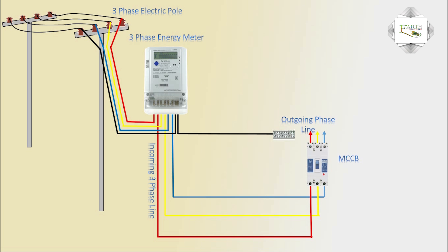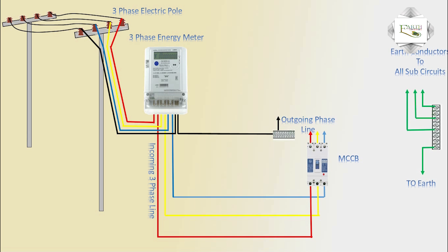MCB incoming phase — three phase. Acting link bar to earth. Earth conductor to all sub circuits.